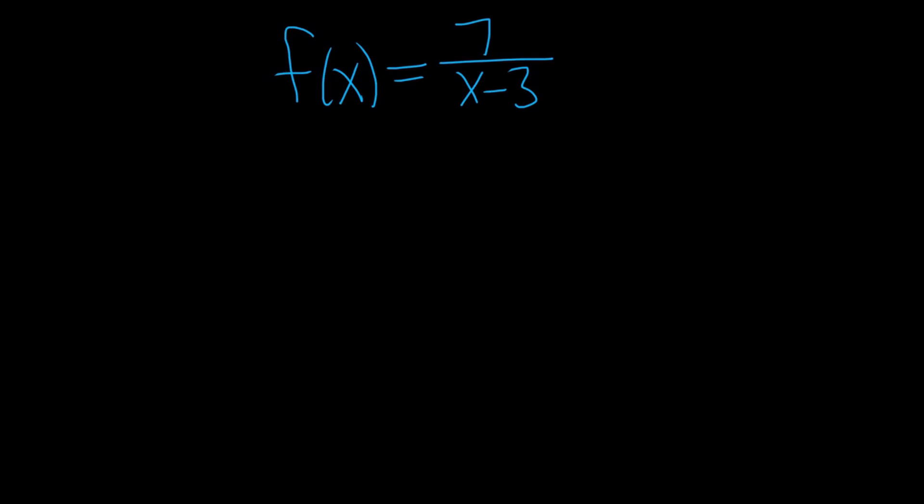So the formula is the following. f prime of x is the derivative of x, and it's given by the following limit. It's the limit as h approaches 0 of a quantity which we call the difference quotient. It's f of x plus h minus f of x, all being divided by h.